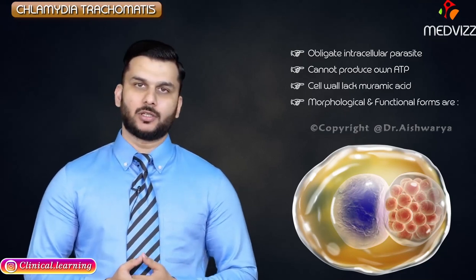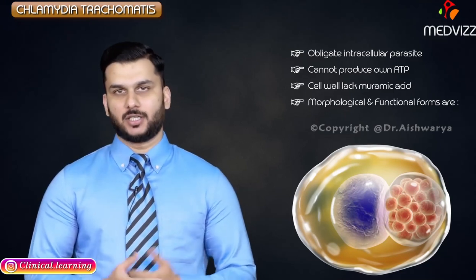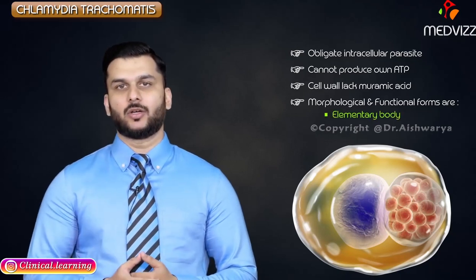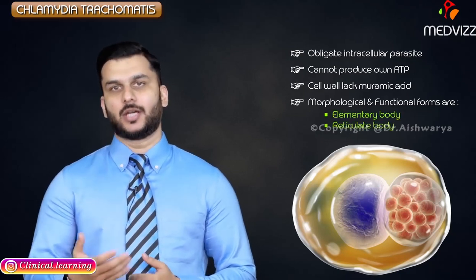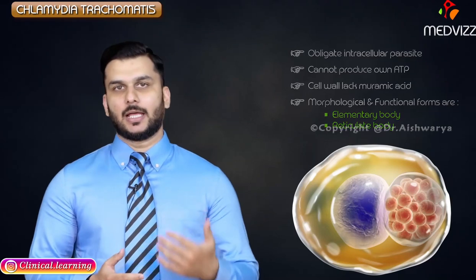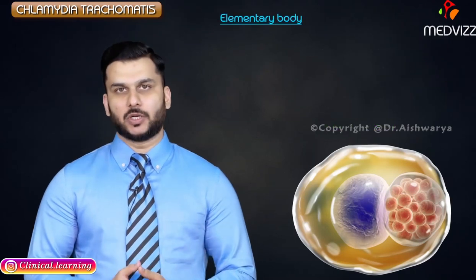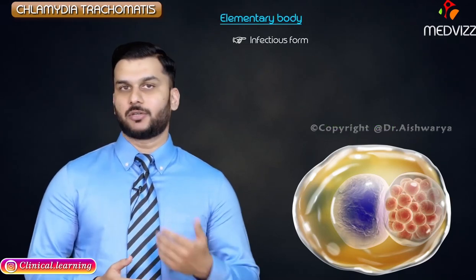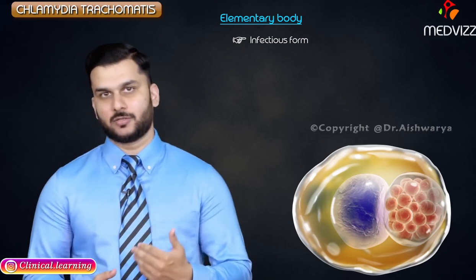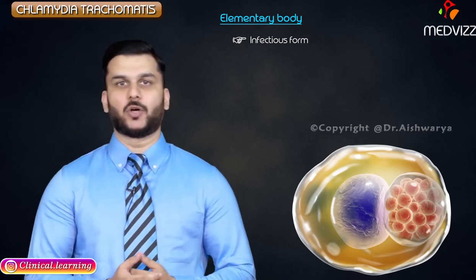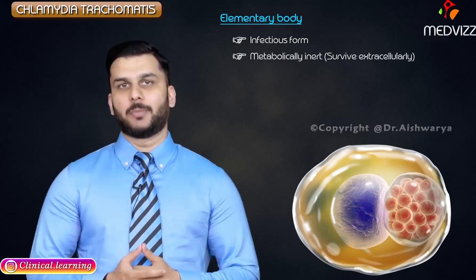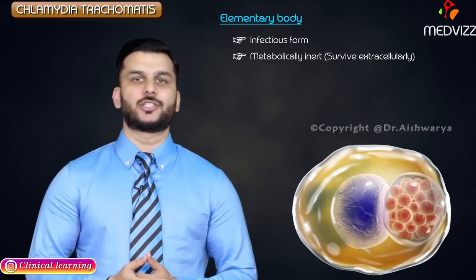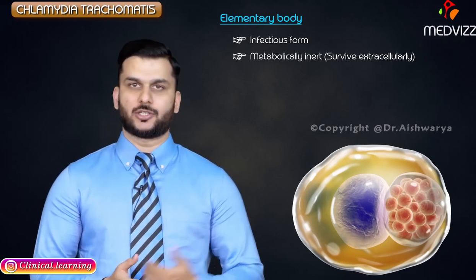Morphological and functional forms are seen in the form of elementary body and reticulate body. Elementary body is the infectious form — remember it as infectious with elementary body — and it is metabolically inert. That's why it can survive extracellularly.